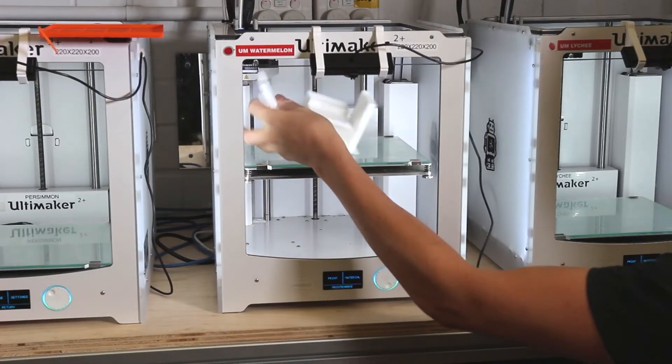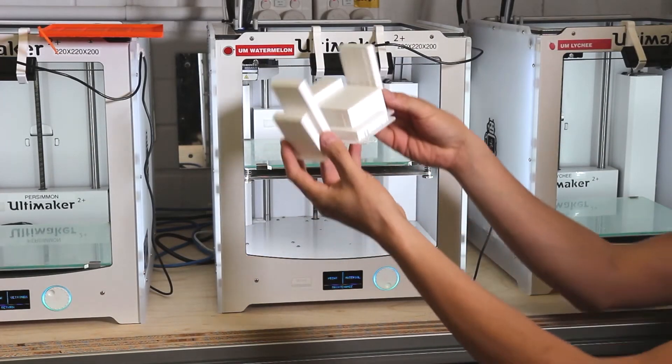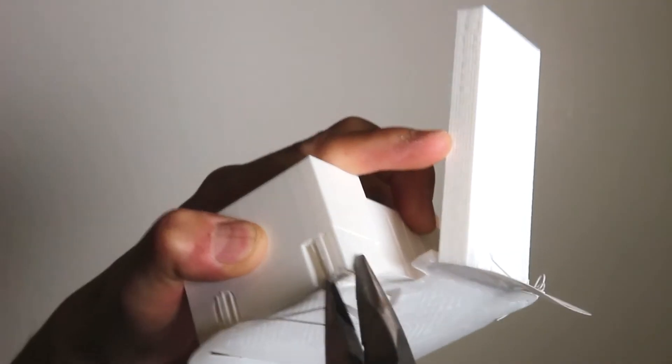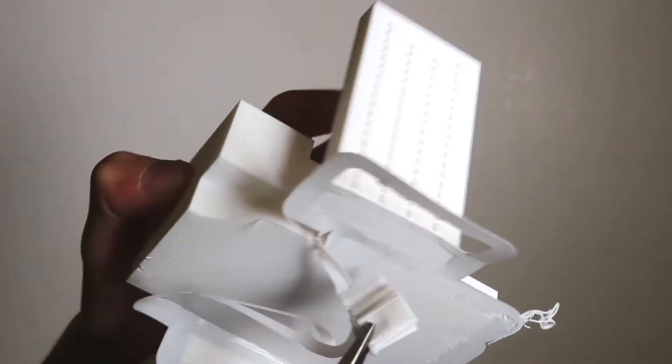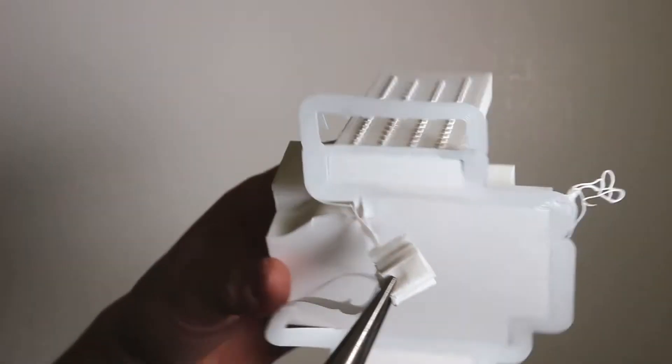Once your model is printed, a technician will remove it from the bed. Pointy nose pliers can be useful for removing the brim and support material of your model.